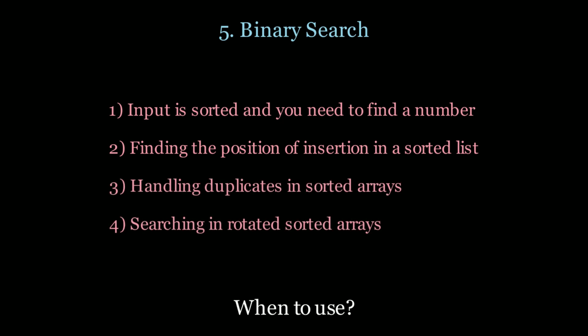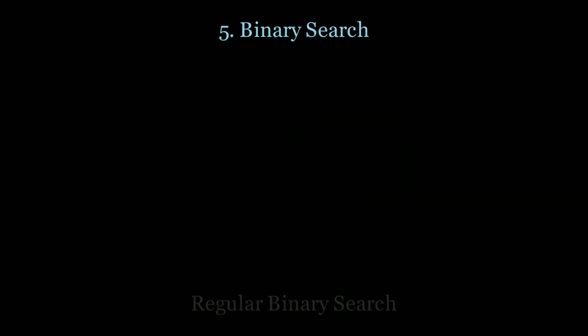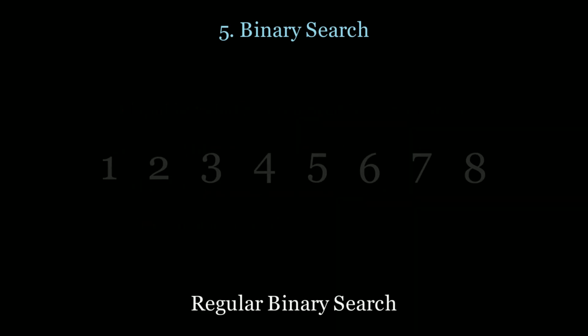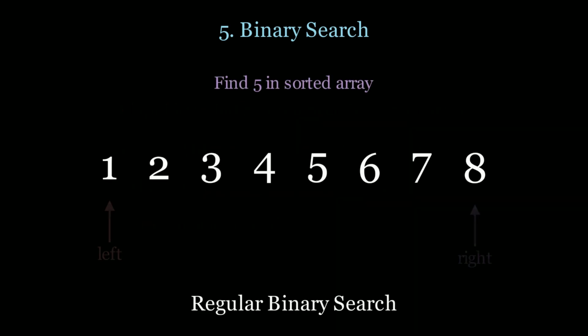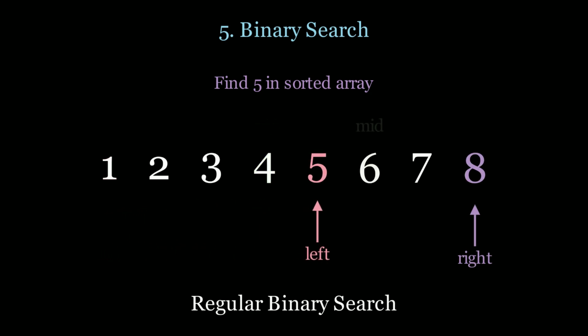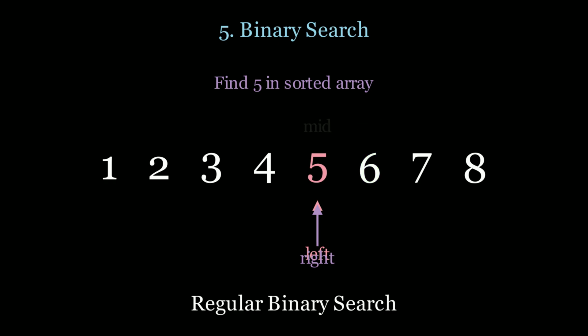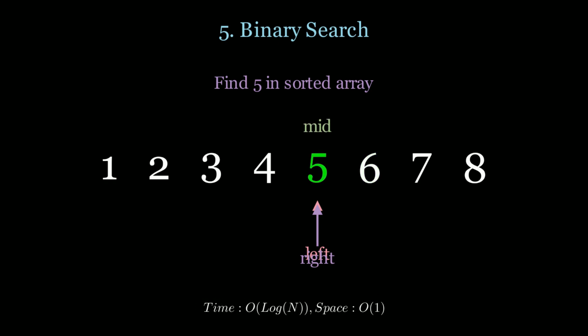As a refresher, let's look at classic binary search where we're searching for a target in the array. If the mid value is less than my target I move the left pointer. If the mid value is greater than my target I move the right pointer — all the way until I find my mid value, which is the target. This happens in log n time.